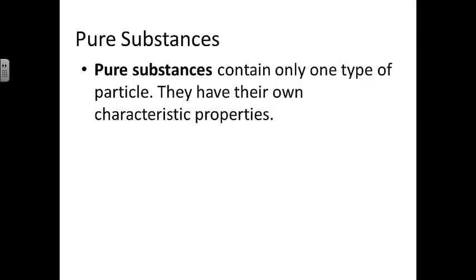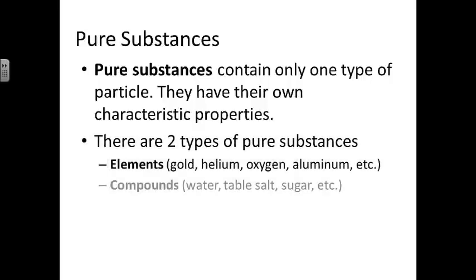Pure substances contain only one type of particle. They have their own characteristic properties. There are two types of pure substances: elements such as gold, helium, oxygen, and aluminum, or compounds such as water, table salt, and sugar.